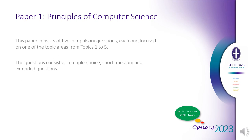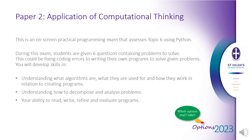There are five compulsory questions in Paper one, each focusing on one of the topic areas from topics one to five. The questions will consist of multiple choice, short, medium, and extended questions. Paper two is an on-screen practical programming exam that assesses topic six using the Python programming language. During this exam, students are given six questions containing problems to solve — this could be fixing coding errors or writing their own programs to solve given problems.